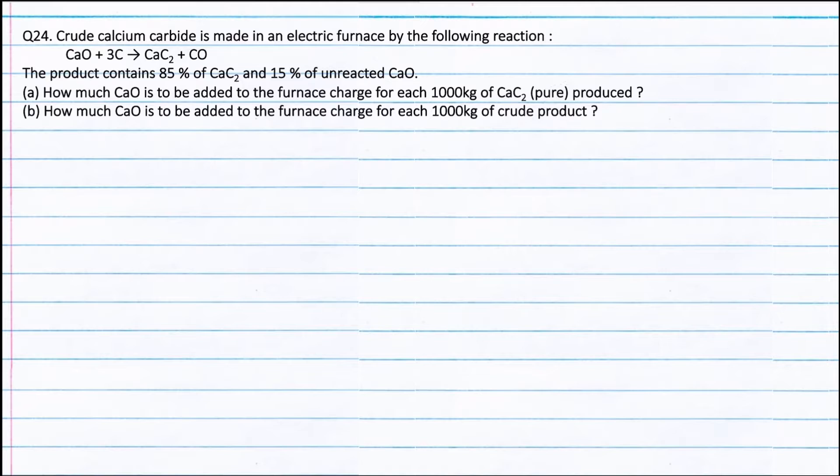Question 24. Crude calcium carbide is made in an electric furnace by the following reaction: Calcium oxide plus 3 moles of carbon forming calcium carbide plus carbon monoxide. The product contains 85% of calcium carbide and 15% of unreacted calcium oxide.